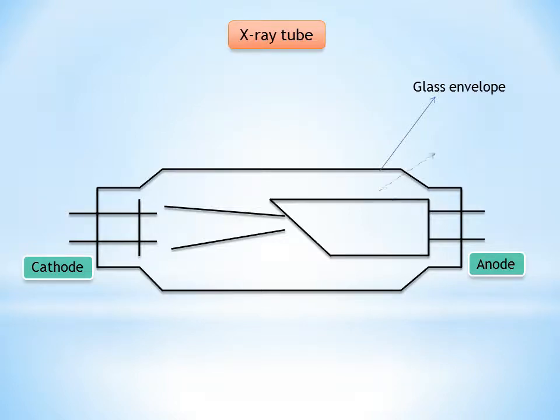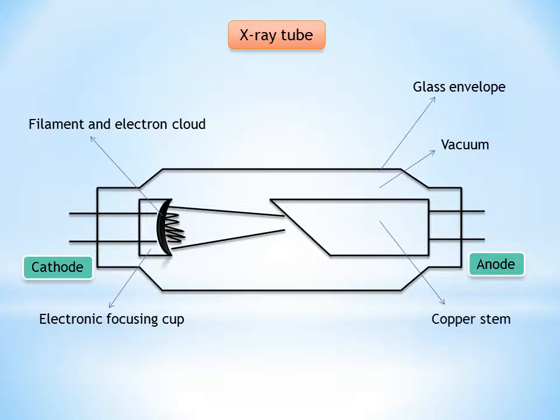The filament is the source of electrons within the X-ray tube. It is a coil of tungsten wire about 2 mm in diameter and 1 cm less in length. It is mounted on two stiff wires that support it and carry the electric current. These two mounting wires lead through the glass envelope and connect to both the high and low voltage electrical sources. The filament is heated to incandescence by the flow of current from the low voltage source and emits electrons at a rate proportional to the temperature of the filament.